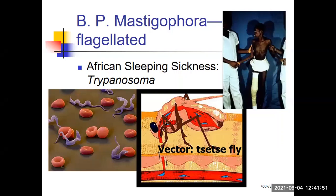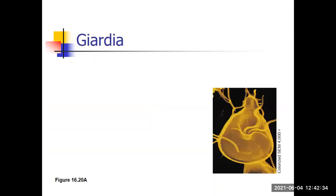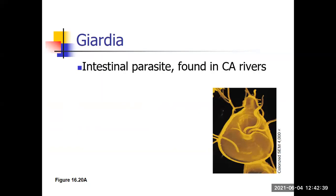We divided Protista into two groups: protozoans, which are animal-like, and algae, which are plant-like. Protozoans are classified on the basis of movement. Here's another example of a flagellated protozoan: giardia. If you're thinking African sleeping sickness is only in Africa — are you going to California? Then you've got to watch out for giardia. Giardia is an intestinal parasite found in California lakes, rivers, and streams. So if you've ever been to one of those, you could potentially pick up giardia.